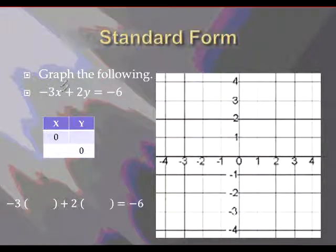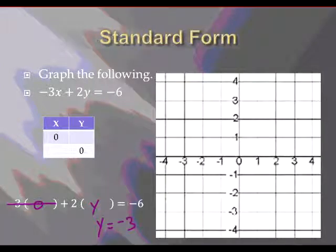First one, the x-value is 0. So we'll come down to our equation. Instead of x, we plug in 0. I want to know what is y. 3 times 0 is 0. So that entire term disappears. You get 2y equals negative 6. If you divide both sides by 2, you'll find that y is equal to negative 3. All we have to do is plug that point into our table and plot the point over in the graph. 0, negative 3. This is a y-intercept. You're on the y-axis.